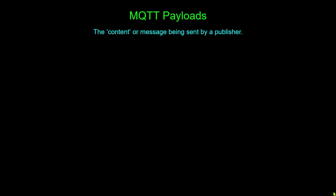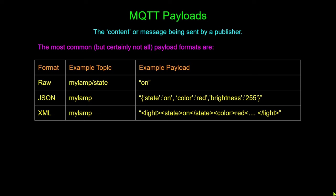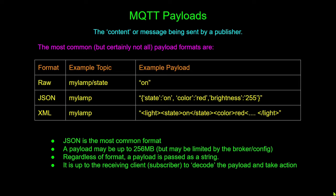MQTT payloads are the message content being sent by the publisher. You can send them in many formats — the most common is JSON — but you can send a single value, or a string of values through JSON or XML. Remember that no matter what the format, the actual message is always sent as a string. So if a numeric value like a brightness of 255 comes through, it's up to the subscriber to convert it from a string to a numeric value.